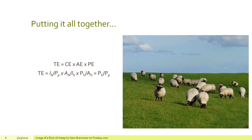Another way to look at this: trophic efficiency is the product of the three efficiencies. Trophic efficiency equals consumption efficiency times assimilation efficiency times production efficiency. Consumption efficiency is I sub H over P sub P, multiplied by assimilation efficiency A sub H over I sub H — the I sub H's cancel — multiplied by production efficiency P sub H over A sub H. The A sub H's then cancel, leaving only P sub H over P sub P.